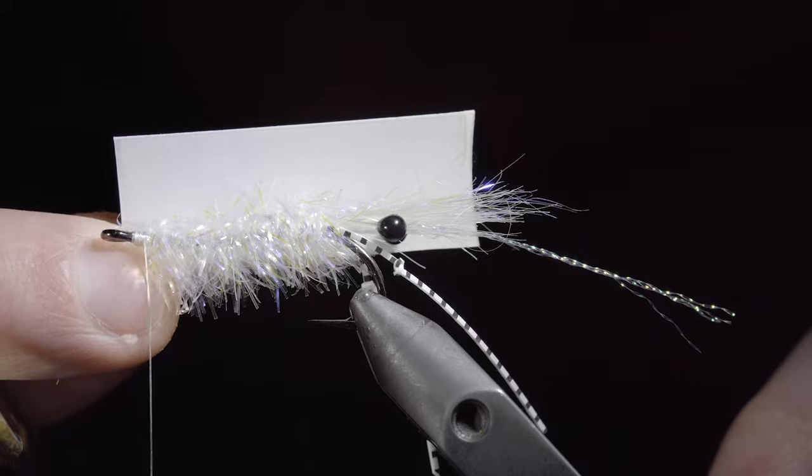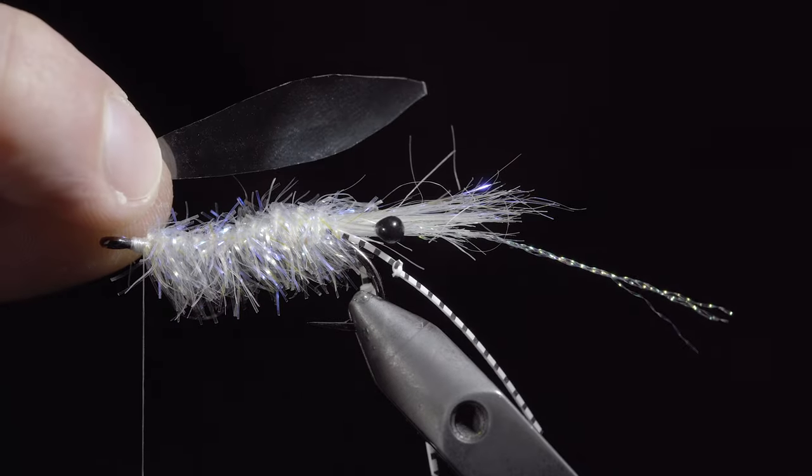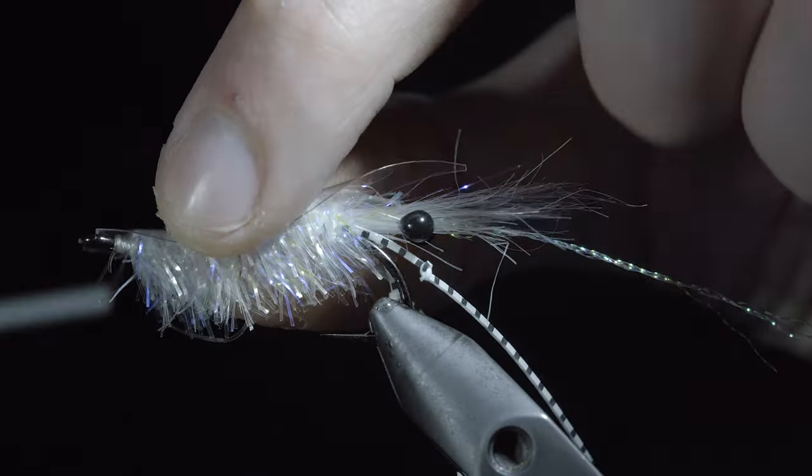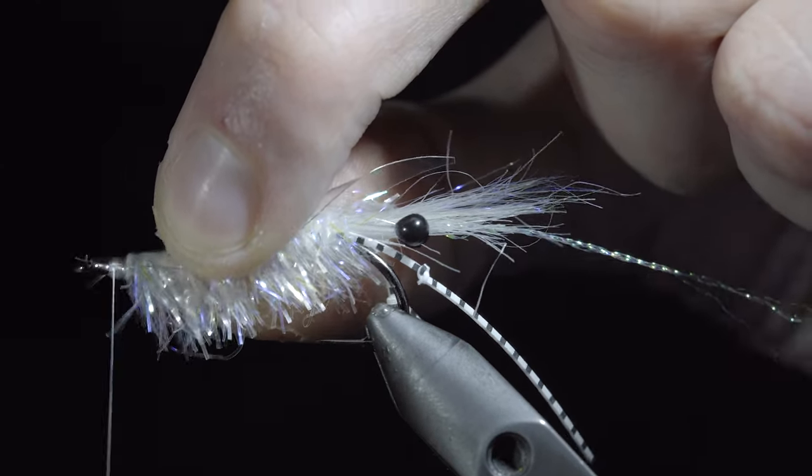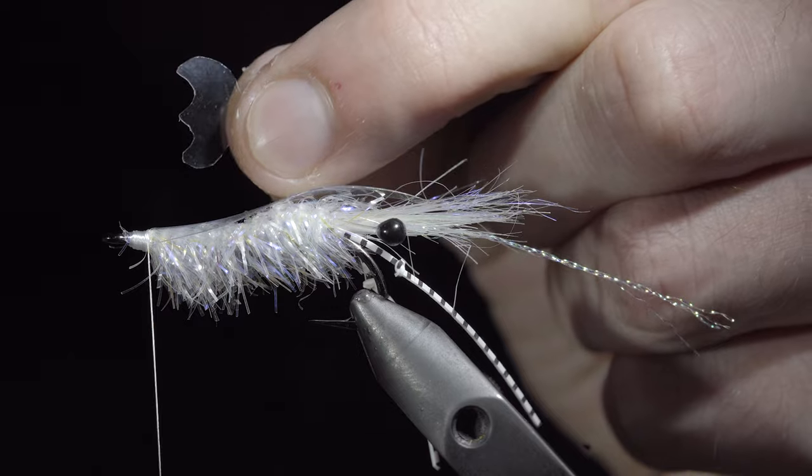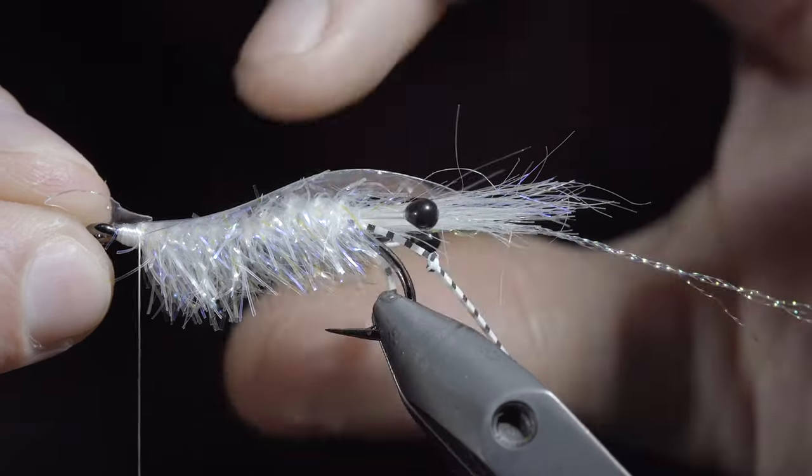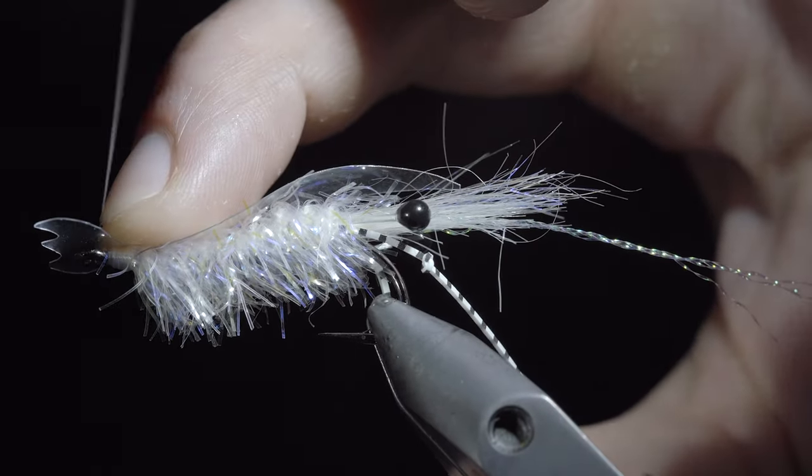For the back of our fly, we will use a piece of thin skin trimmed to shape. Secure to the back of the fly and then use another small piece of thin skin to simulate a tail, securing it over the hook eye.